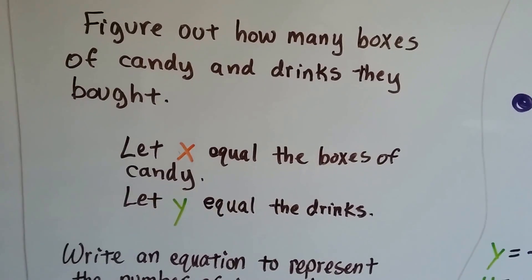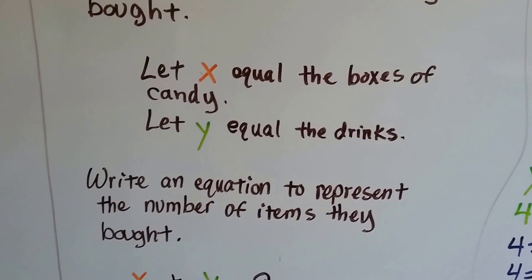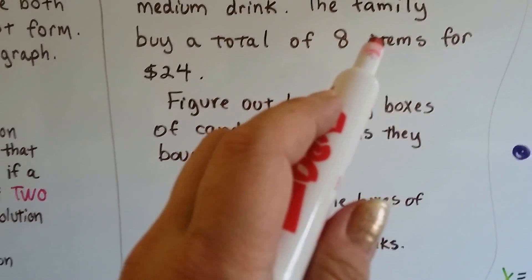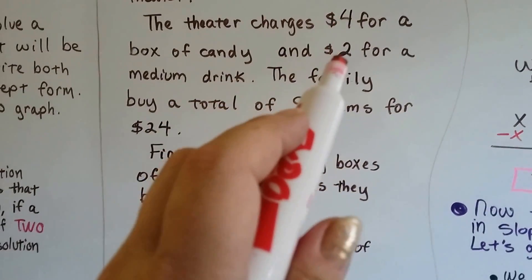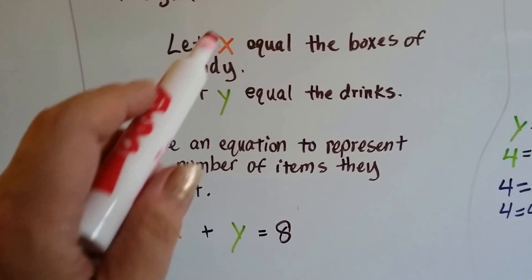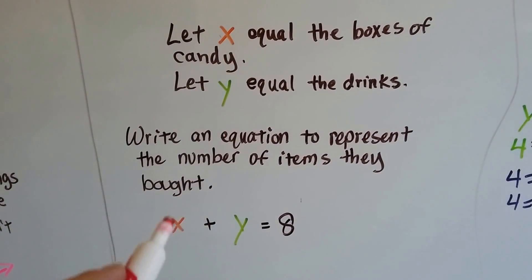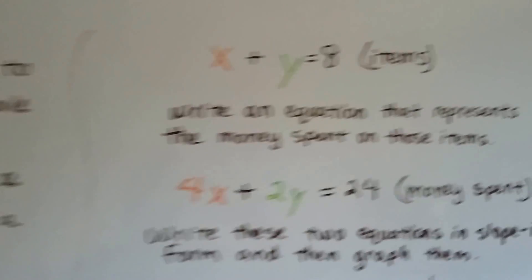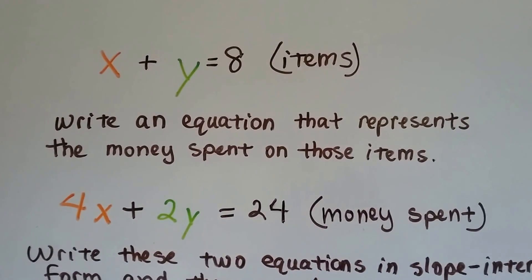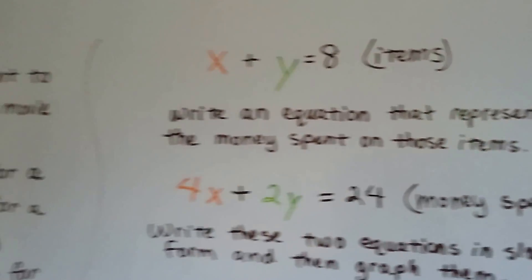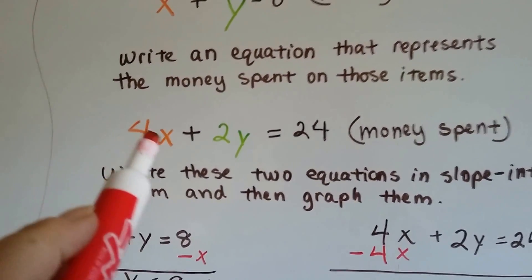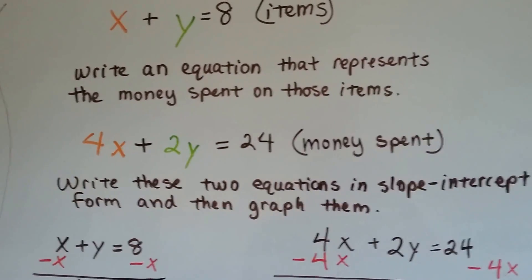We're going to let x equal the boxes of candy and y equal the drinks. We need to write an equation to represent the number of items they bought. They bought eight items for $24. The candy is $4 and the drinks are $2. So x plus y equals eight for the amount of items they bought — that totals the number of items. Now we need to write an equation that represents the money spent. They spent $24, so 4x plus 2y equals $24 for the money spent.